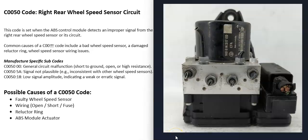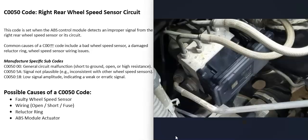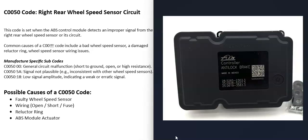The last thing on the list is a bad ABS module or actuator. This isn't going to be too common — usually if a module like that goes bad, you're going to be getting a lot of other codes as well. While it is possible it only gives out one code, usually when one of these components goes bad you'll be getting a lot of other wheel speed sensor codes and different things like that.